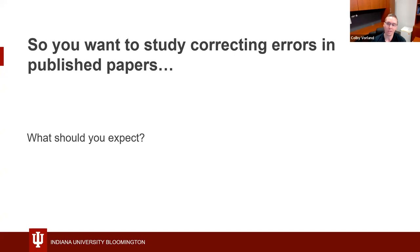There are many different things you could choose to do if you find a published error. The first is that you could ignore it. Given the volume of errors in published papers, sometimes that's a reasonable option if correcting it may not change the interpretation of the results, or if the paper may not be very influential in your field. Another option is to do a quick post on pubpeer.com, a platform that allows you to link post-publication commentary to any article with a DOI, flagging it for others who may check PubPeer.